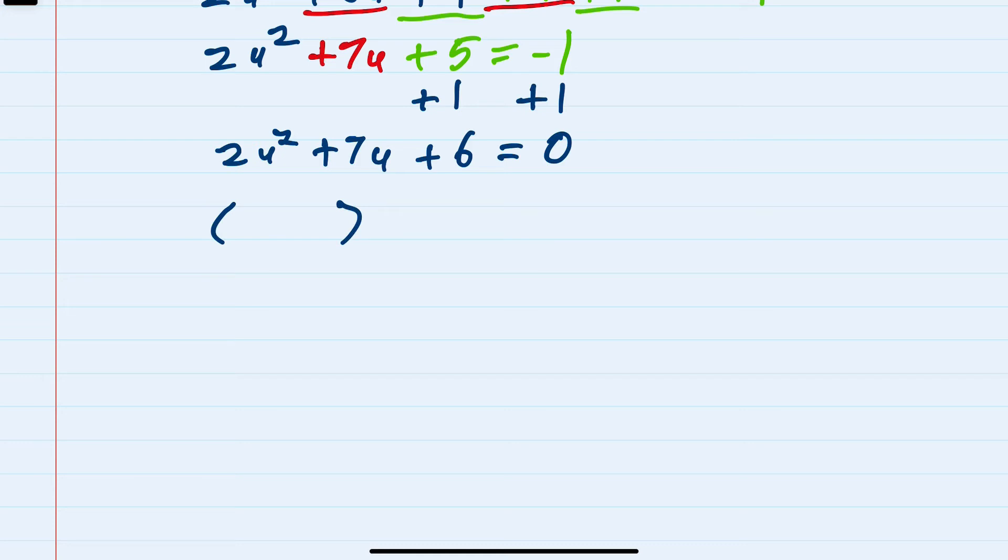Since the numbers are pretty small, I'll use trial and error. It would have to be 2u and u to multiply to be 2u squared. From the 6, our options are just 1 and 6 or 2 and 3.